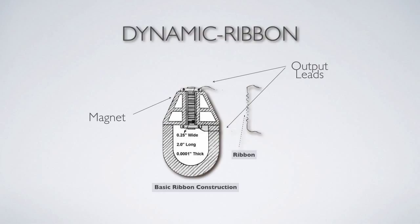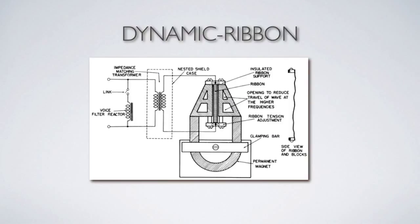Ribbon microphones are much more fragile but have a lot lower mass, so they'll have better transient response than moving coils. Looking at a clearer diagram, we can see the insulated ribbon support at the top and bottom — ribbons are actually tensioned to a certain value so that they operate with the flattest frequency response. There are plans available to build your own ribbons, though it takes know-how and patience. The schematic diagrams show the transformer that matches the impedance of the microphone element to the preamplifier, and there's a filter that changes the frequency response.